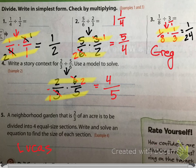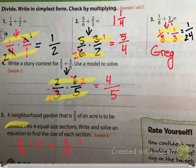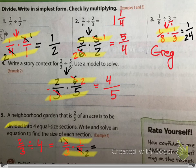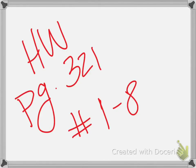Lucas, last problem. A neighborhood garden that is two-thirds of an acre is to be divided into four equal sections. So we get two-thirds divided by four. Write that as a multiplication sentence: two-thirds times one over four. Cross-cancel two and four — cross out the two, make it a one, cross out the four, make it a two. Cross-multiply and you get one-sixth. Your homework is page 321, numbers one through eight.